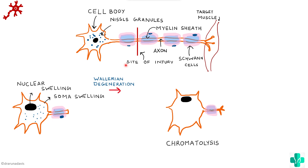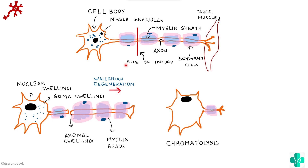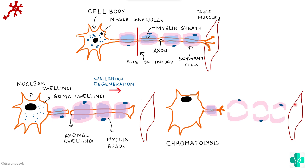The axon swells and the myelin sheath also swells up and can be converted to fat droplets known as myelin beads. The Schwann cell shells remain, but the myelin sheath is converted to fat droplets. The terminals, which normally connect to the target structure, become retracted. After some time the whole axonal content disintegrates, is phagocytosed by different cells, and it is just the Schwann cells that remain.